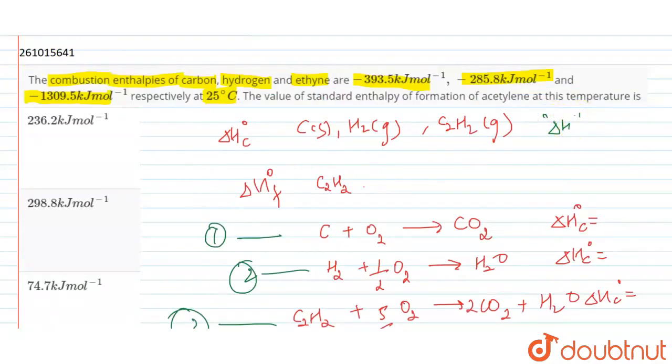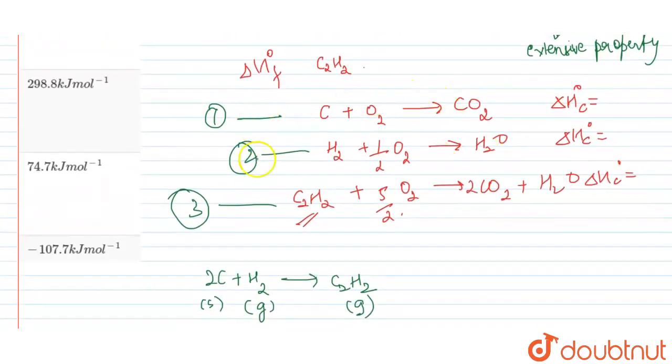Why do we do that? Delta H, enthalpy, is a state function - only initial and final state matter. It is an extensive property, it depends on mass and moles. If we multiply that number, we can use these facts to reach our target equation.